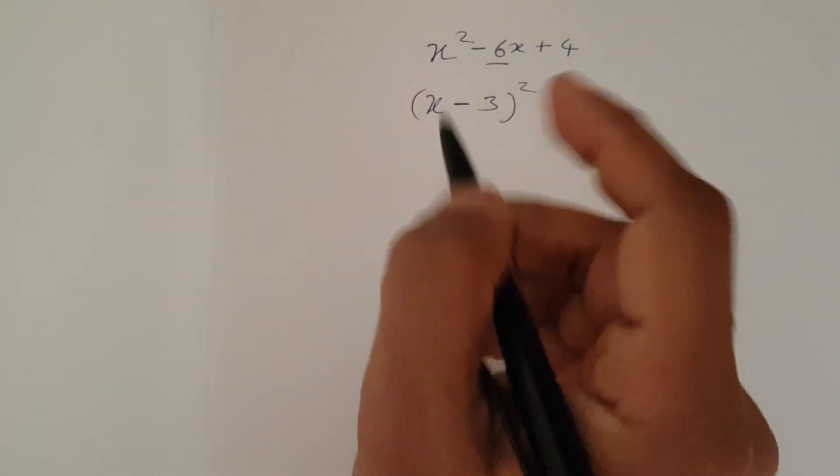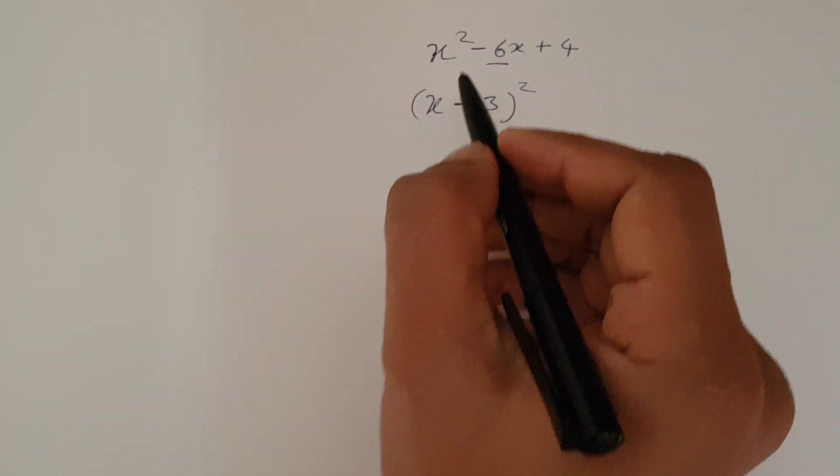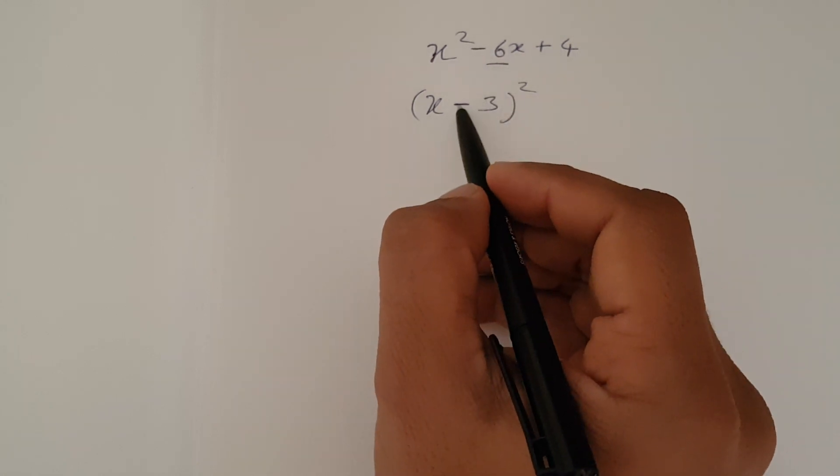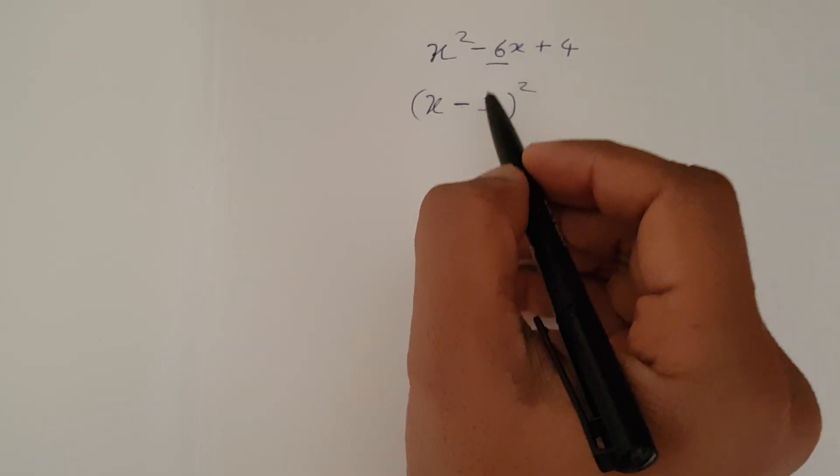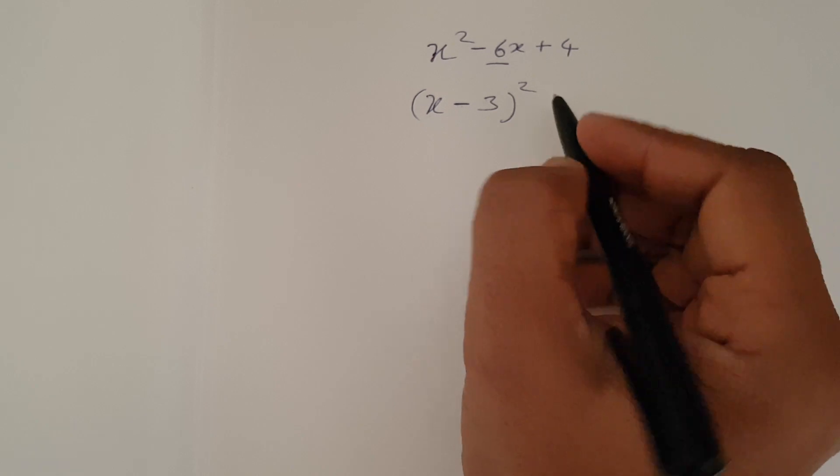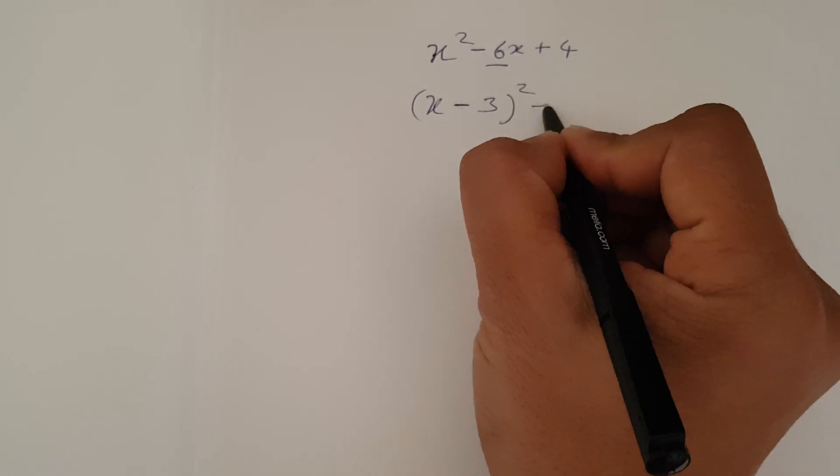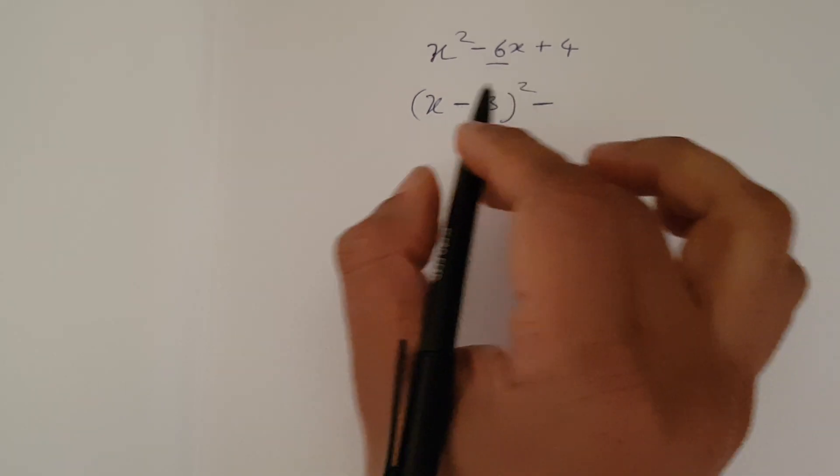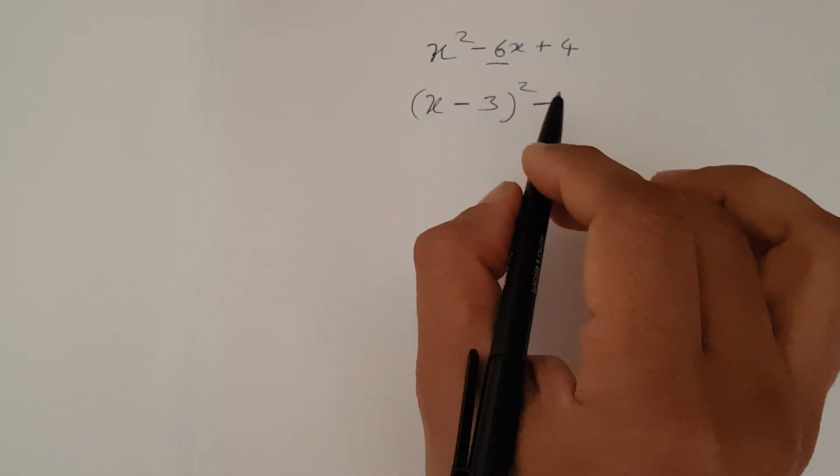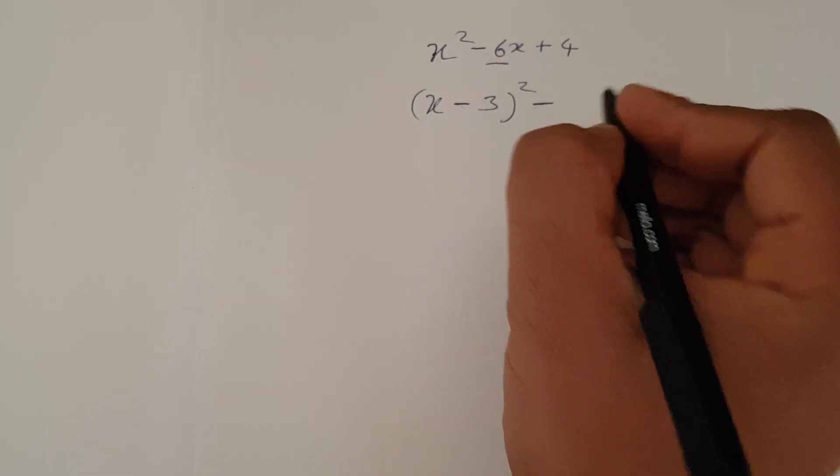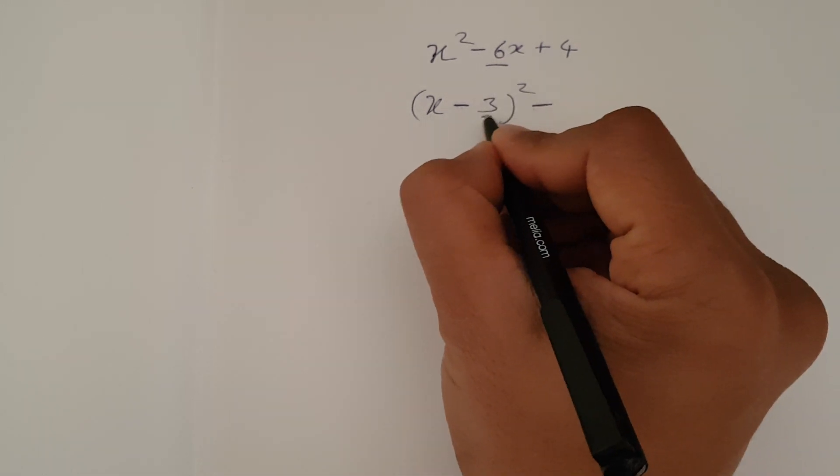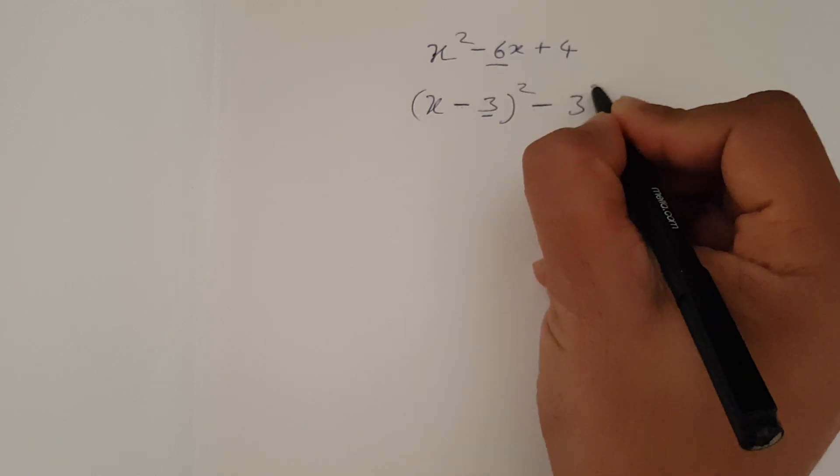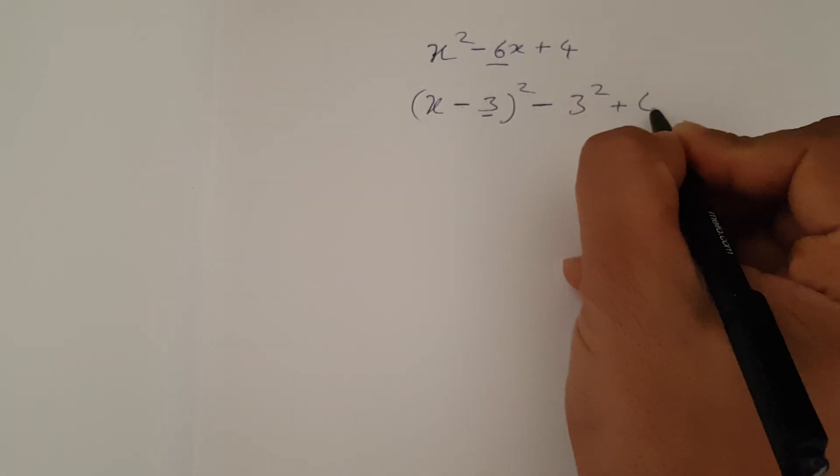So first thing what I did, I write x, whatever sign is here, minus, and square half the middle number and square the bracket. Then after that, put minus, always put the minus, doesn't matter if it's a plus or minus, always put minus here. And square this number. And bring down this 4 here, plus 4. That's it.